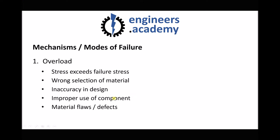Other reasons why overload failure may occur are flaws or defects in the material. In the previous outcome we looked at non-destructive testing mechanisms that can detect flaws and defects. Changes to the environment may also cause overload failure — for example, if ambient temperatures rise significantly, this can affect the properties of the material. It's important to point out that many of these factors — inaccuracy of design, improper selection of materials, flaws, and changes to environment — can cause all different types of failure, so consider these causes as we go through other modes of failure.